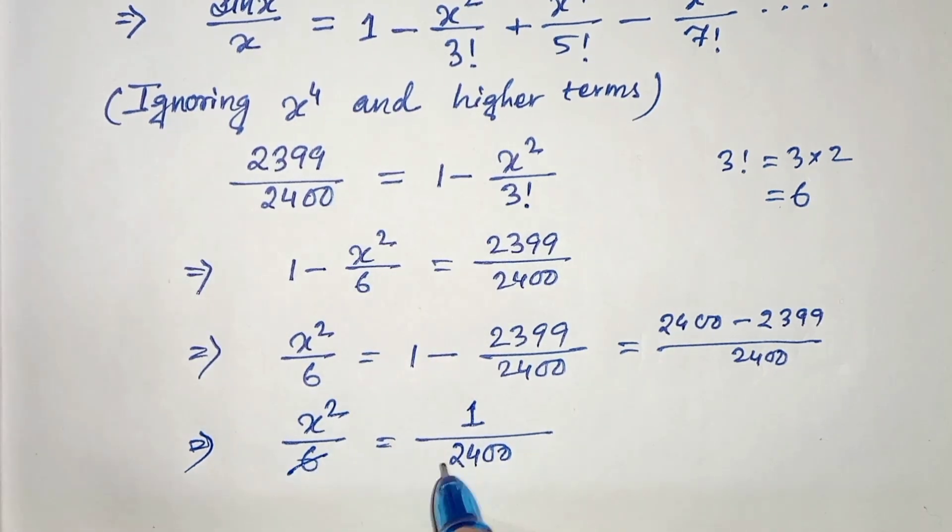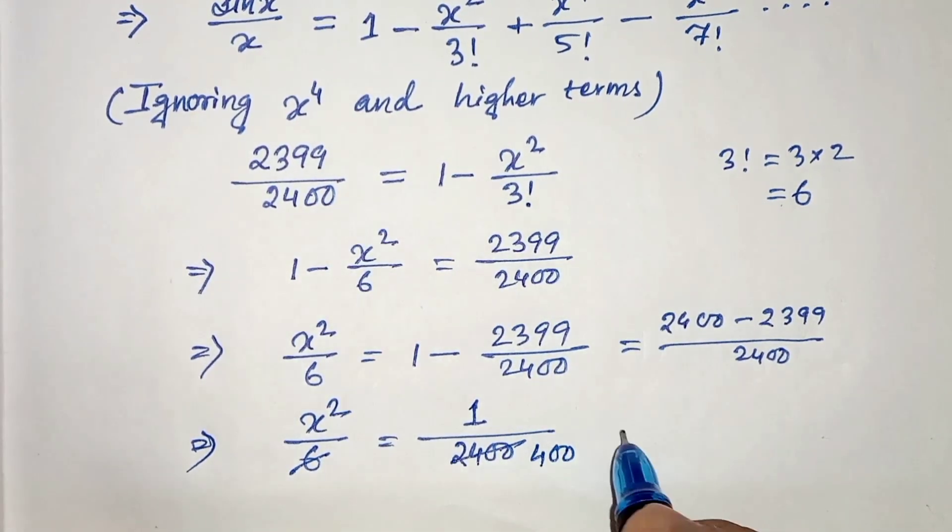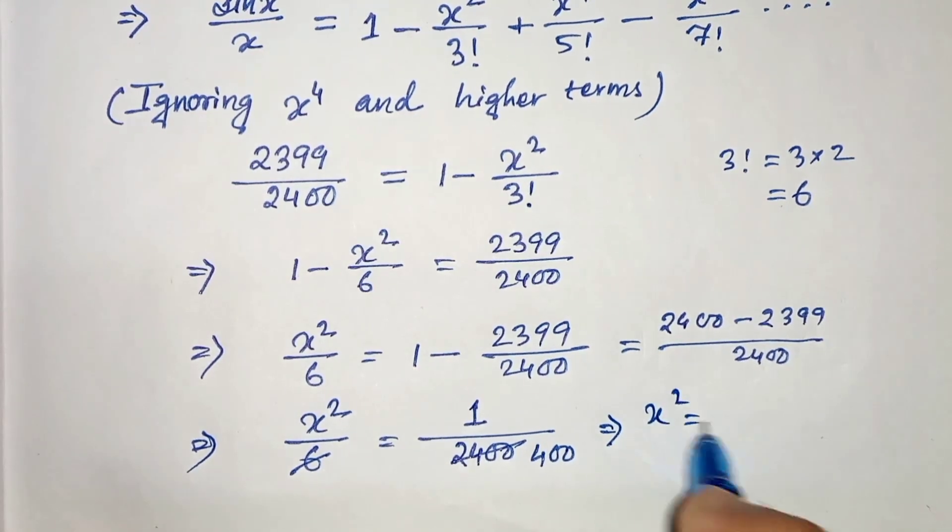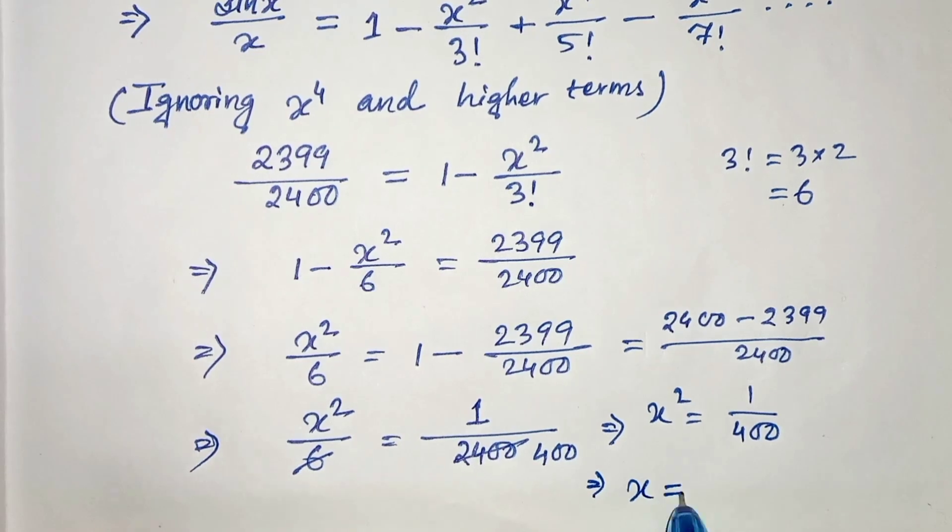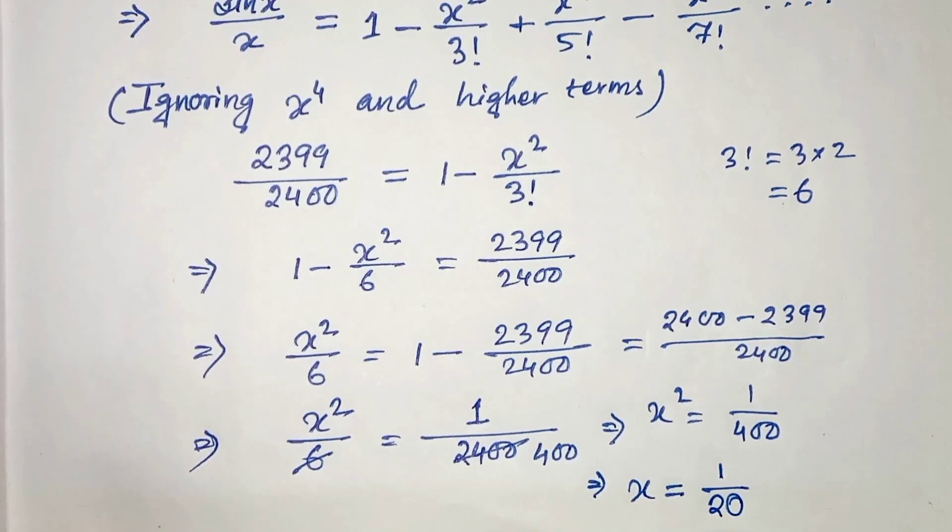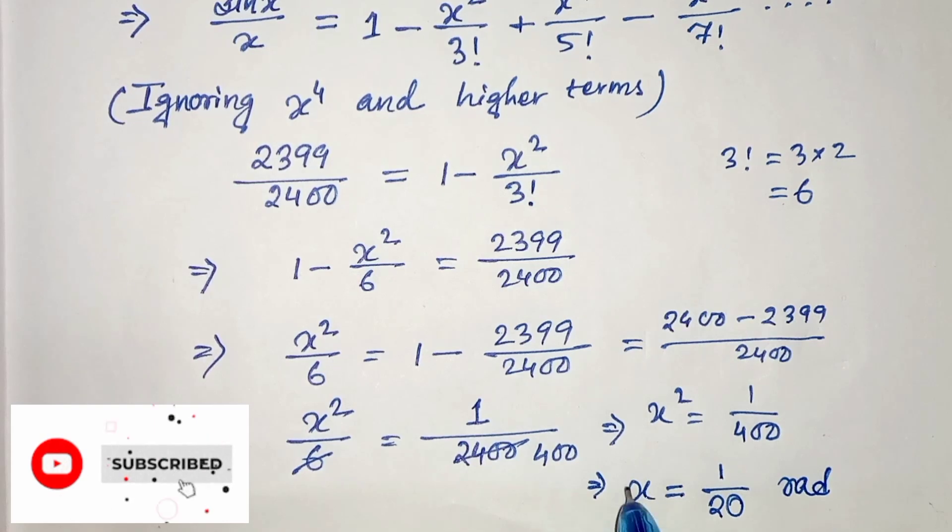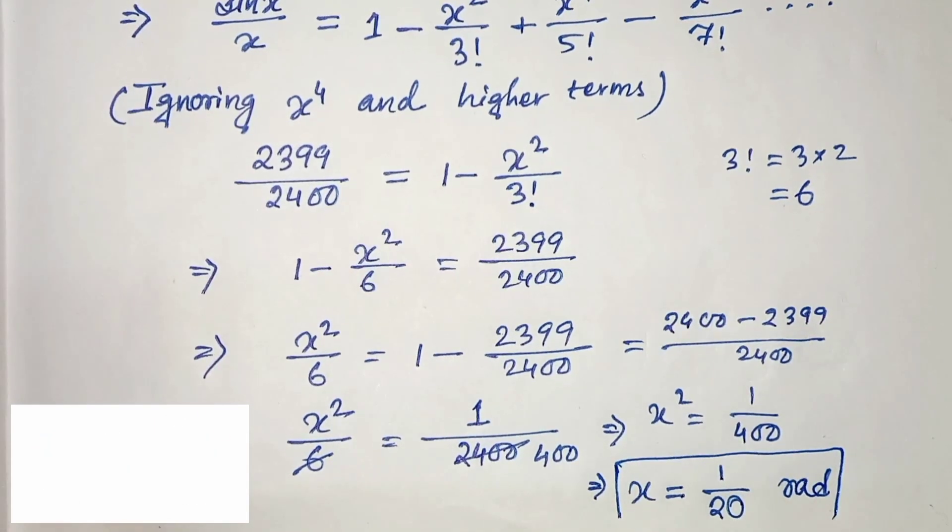Now this cancels by 400. So we get x squared equals 1 by 400. Therefore x equals 1 over 20. This is in radians. So this is our solution. Thanks for watching.